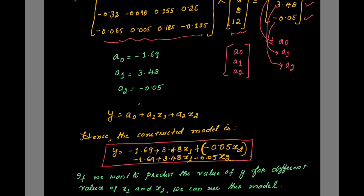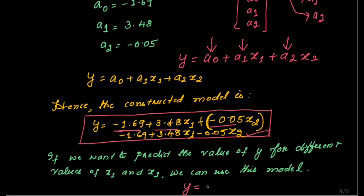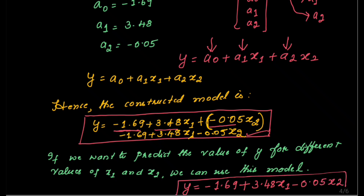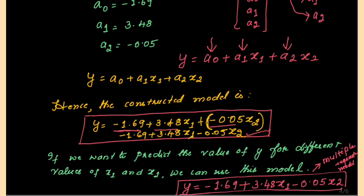Now substitute in the multiple linear equation y equal to A0 plus A1 into X1 plus A2 into X2. A0 is minus 1.69, A1 is 3.48, and A2 is minus 0.05. So the multiple linear regression model is: Y equal to minus 1.69 plus 3.48 into X1 minus 0.05 into X2. If only the model is required, you can stop here. If the question also asks for the value of Y for new values of X1 and X2, substitute the new values into this equation to get Y.